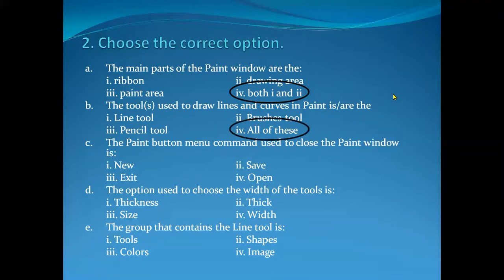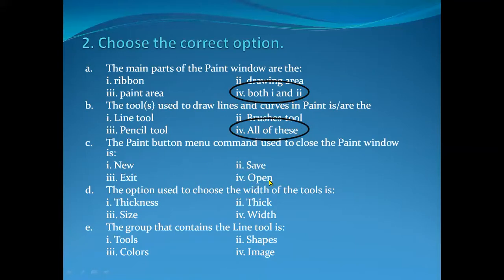Now part C — the Paint button menu command used to close the Paint window is: New, Save, Exit, or Open? As the name specifies, to close the Paint window: New is not the right option, Save is not the right option, Open is not the right option — so Exit is the right option.